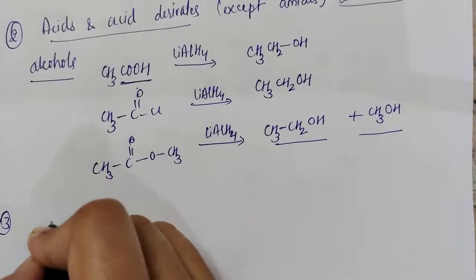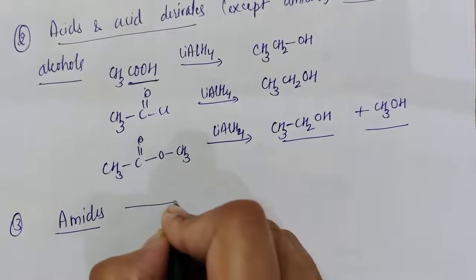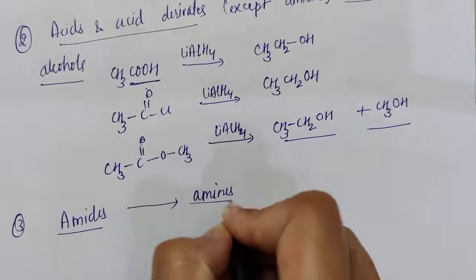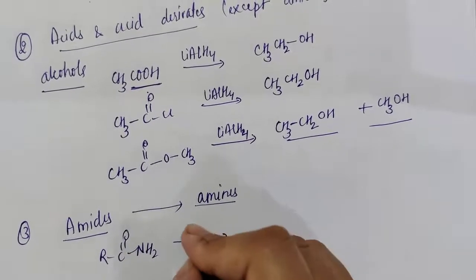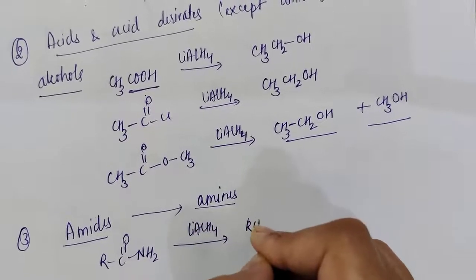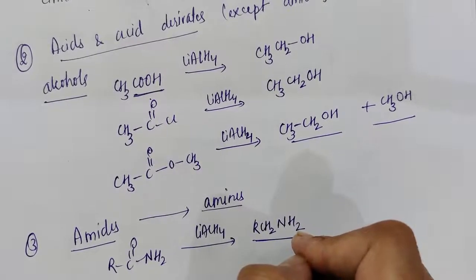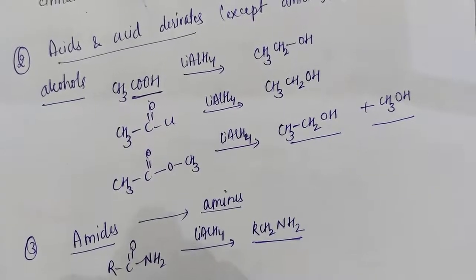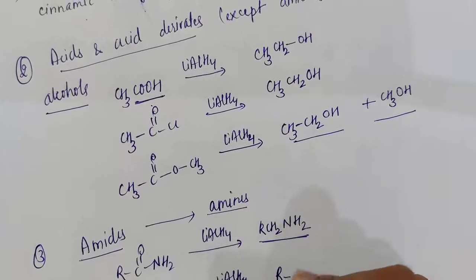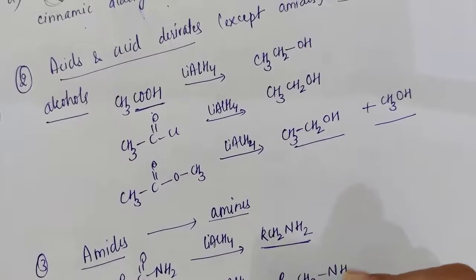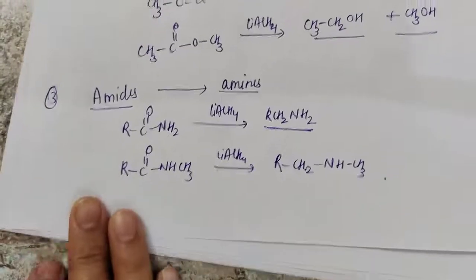The exception is amides. Amides are converted to amines rather than alcohols. If you have RCONH₂ on treatment with lithium aluminium hydride, RCH₂NH₂ is obtained. Similarly, a substituted amide gives RCH₂NHCH₃ as the product. This is how amides are converted into amines.